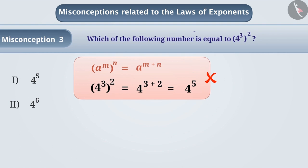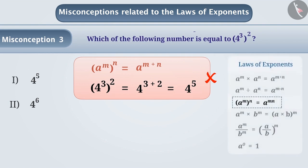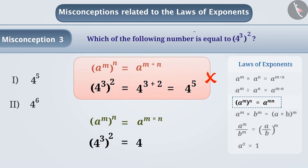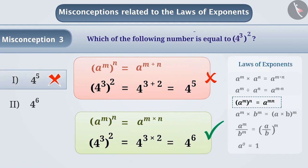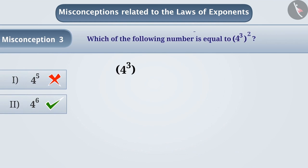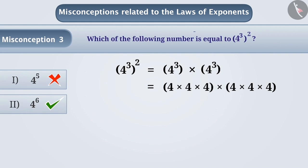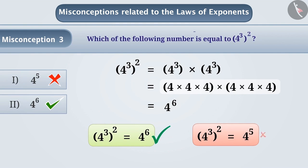Here, multiplication is done instead of addition. The correct understanding is that a to the power of m, the whole to the power n, is equal to a to the power of m multiplied by n. Therefore, 4 cubed to the power of 2 is equal to 4 to the power of 3 multiplied by 2, which is equal to 4 to the power of 6. Option 1 is wrong and option 2 is the correct answer. We can verify: 4 cubed to the power of 2 equals 4 cubed multiplied by 4 cubed, and 4 has been multiplied by itself 6 times, so we represent it as 4 to the power of 6. Therefore, 4 cubed to the power of 2 equals 4 to the power of 6, whereas 4 to the power of 5 is wrong.